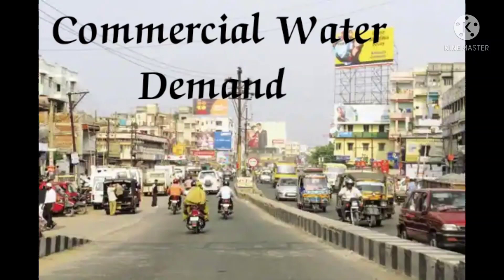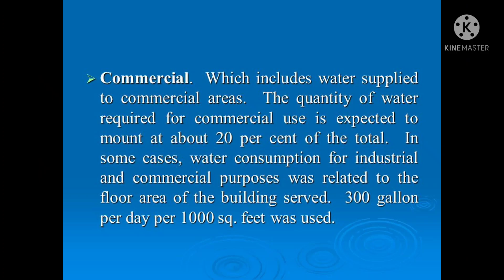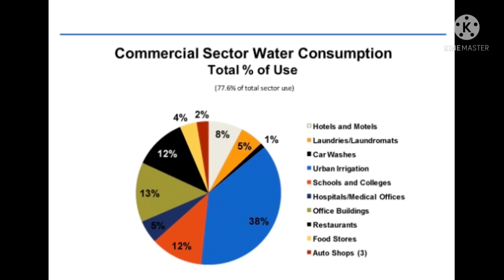The next category is commercial water demand. This covers water required in commercial places like private and public recreational areas, hotels, offices, and shopping centers. The water supply scheme should be designed to account for about one-fourth to one-third of the total water consumption for this use. Such consumption depends on the structure and culture of the city, its business development, and whether the area is developed or underdeveloped.